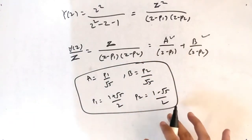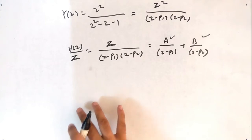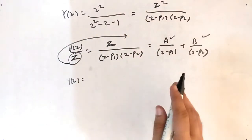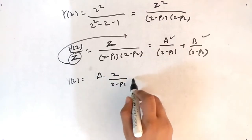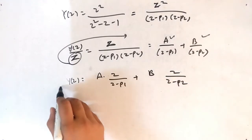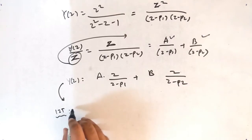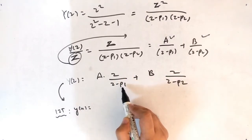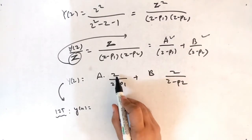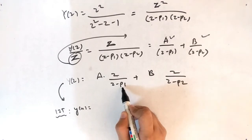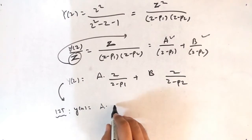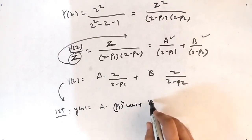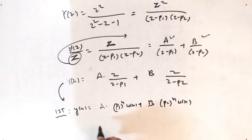Substitute back the values of A, B, P1, and P2. Since Y(Z)/Z was our expression, multiply both sides by Z to get Y(Z) = A·Z/(Z - P1) + B·Z/(Z - P2). Now apply the inverse Z-transform using the formula: if Z/(Z - a) then the inverse Z-transform is aⁿ·u[n]. Therefore y[n] = A·P1ⁿ·u[n] + B·P2ⁿ·u[n]. Plug in the known values of A, B, P1, P2 to get the final answer.